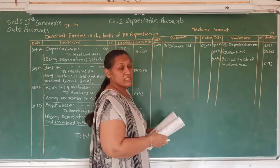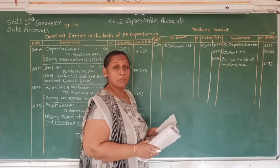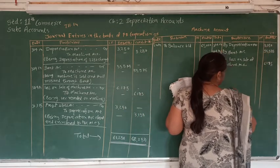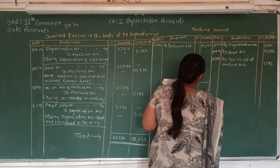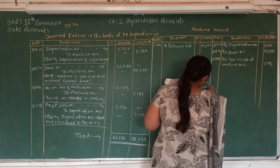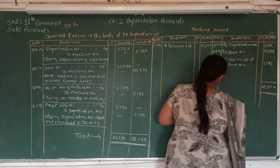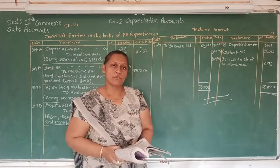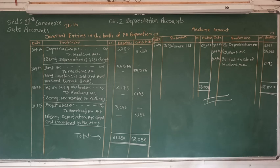We can see that both sides' totals of the machine account must be identical as the machine is sold, so there will be no balance in the machine account. The total is 3,250 plus 55,575 plus 6,175, which equals Rs. 65,000 — so the account is closed. Students, you may note this down in your notebook. Thank you for watching this video.